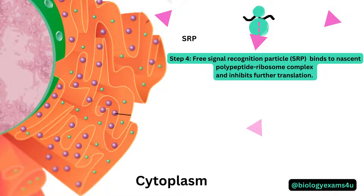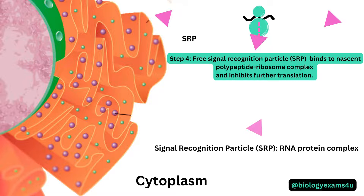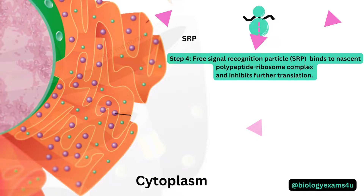The SRP, or signal recognition particle, is an RNA–protein complex that is abundant in the cytosol — a universally conserved ribonucleoprotein that recognizes and targets specific proteins to the endoplasmic reticulum in eukaryotes, and to the plasma membrane in prokaryotes.